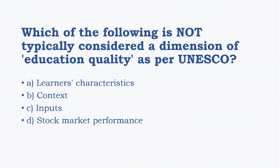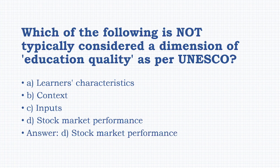Which of the following is not typically considered a dimension of education quality as per UNESCO? Options: learner characteristics, context, inputs, stock market performance. The answer is option D: stock market performance.